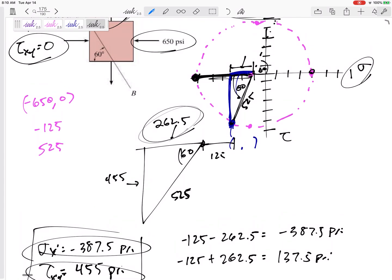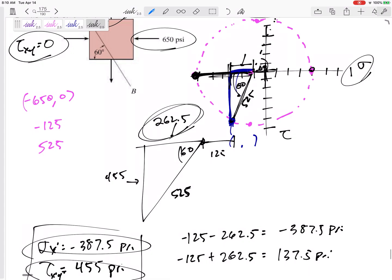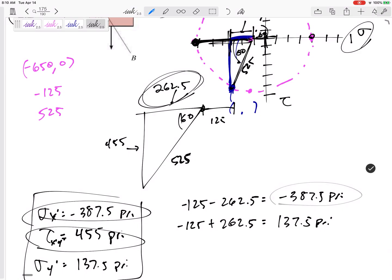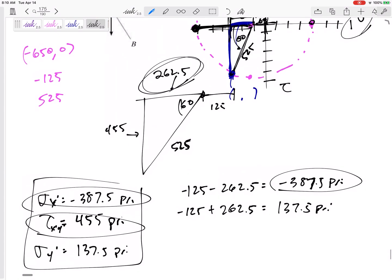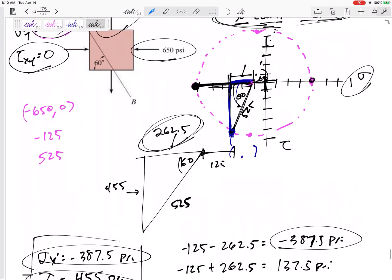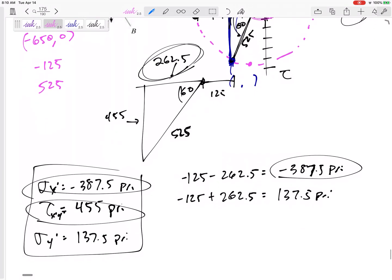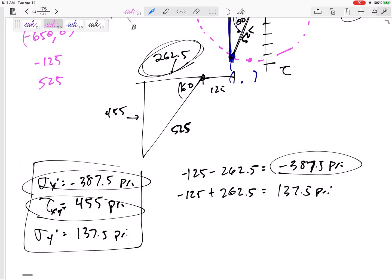The base just helps you know where you are from the origin. So from the origin, I was negative 387.5. And then sigma Y would be the same thing. I just need to find this—that base is the same as this base. It had to give me 137.5 psi.